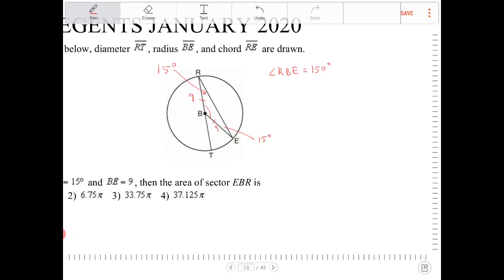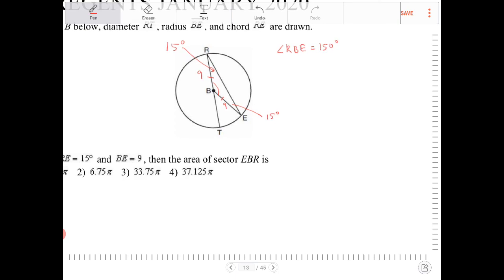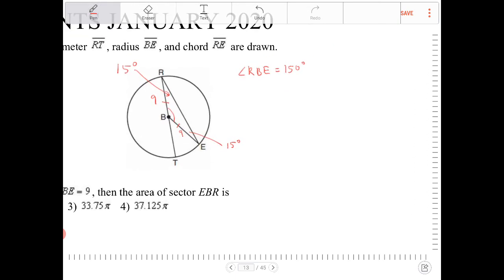The area of a sector, we're talking about EBR, right? So the area of a sector formula is 1 half theta R squared. However, this formula works when theta is equal to an angle measure that's in radians. So you would need to convert 150 degrees into radians.